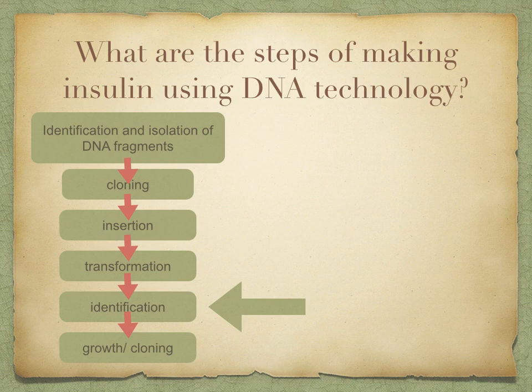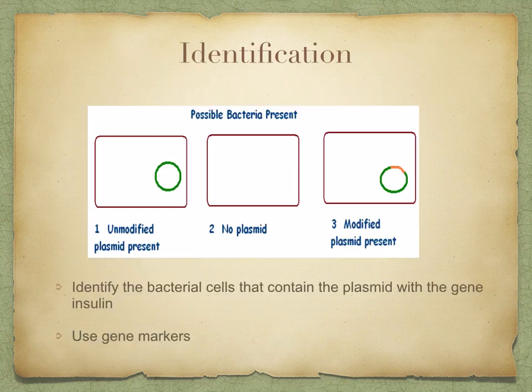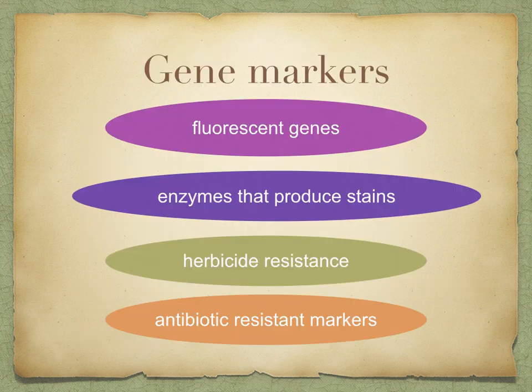We need to identify which bacterial cells have taken up the plasmid that contains your gene. This can be done using gene markers, and there are a number of different ways to achieve this, all involving a separate gene on the plasmid that contains the gene we want. Different gene markers include fluorescent genes, staining, herbicide resistance, and antibiotic-resistant markers. The one you'll come across most frequently is the antibiotic-resistant marker.